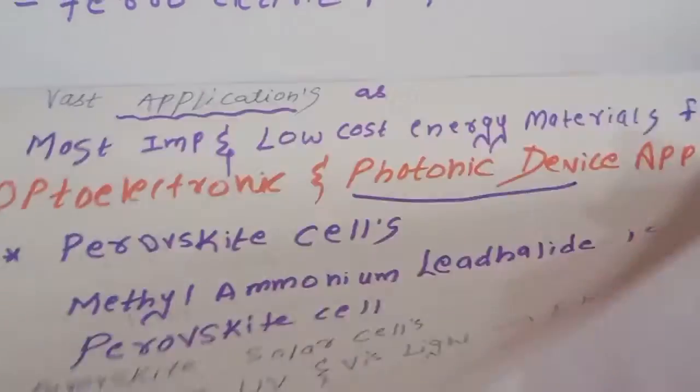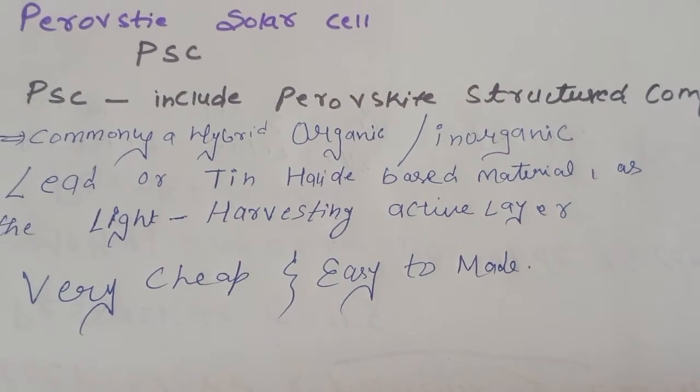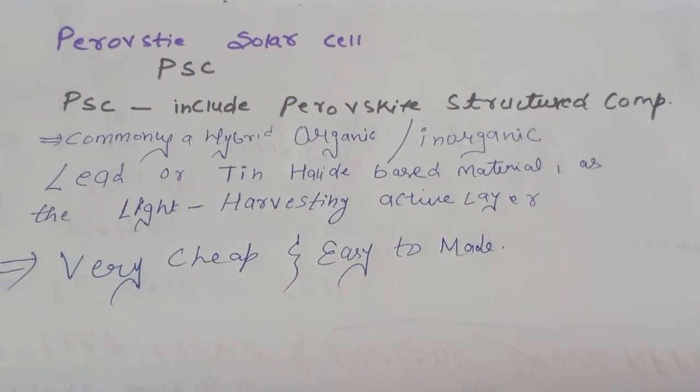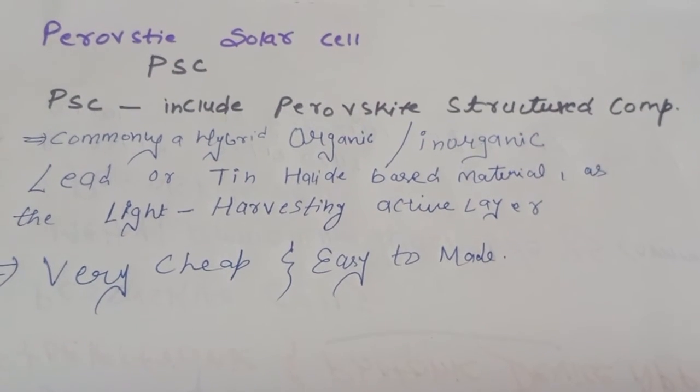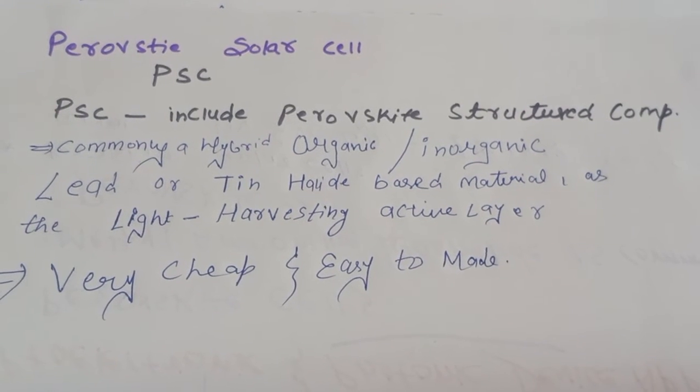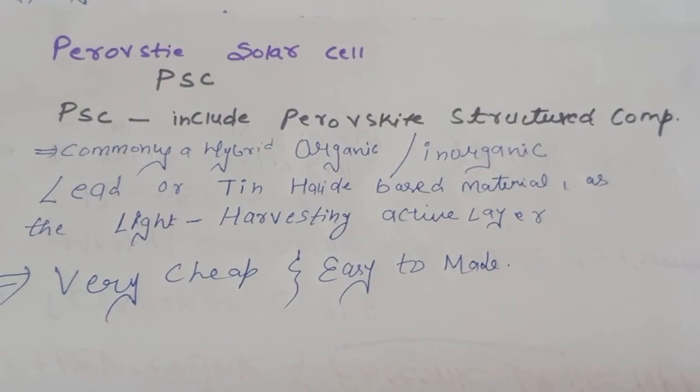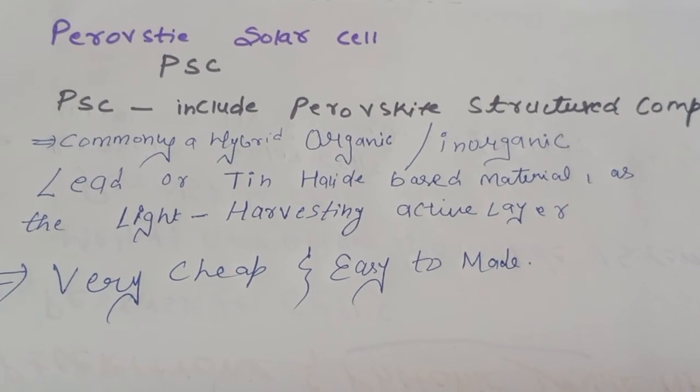So we can say that this perovskite solar cell we can write in short as PSC. This includes the perovskite structured compound, means some organic or inorganic compounds like lead or tin halide-based materials will be embedded in them. So we can easily harvest the electricity and they are very cheap and easy to make.